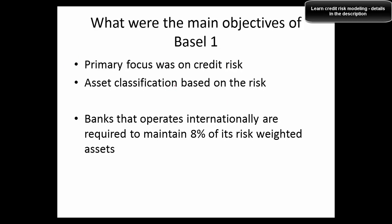The first area is regulations. One question often asked is: what were the main objectives of Basel 1? The primary focus was on credit risk. Asset classification was done based on risk for the first time. Banks that operate internationally are required to maintain 8% of risk-weighted assets. These are some of the important things you can discuss in an interview if someone asks about the objectives of Basel 1.